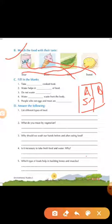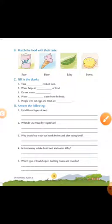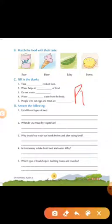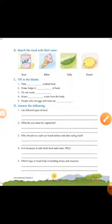Next, fill in the blanks. First is, take blank cooked food. Take properly cooked food. You should always take properly cooked food. So here you have to write properly. P-R-O. Properly.